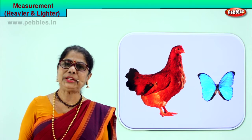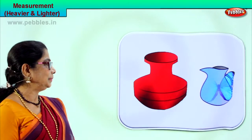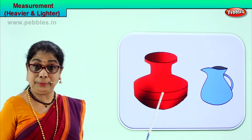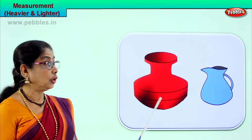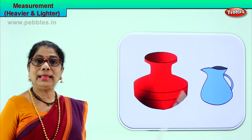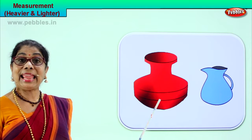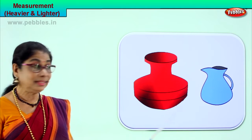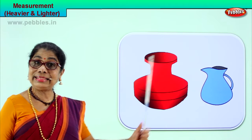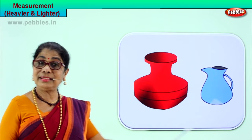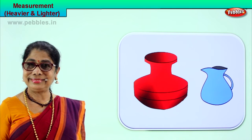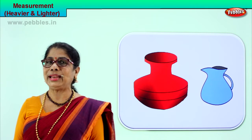Did you understand? Let's go to another picture. We have two pots here. This pot is made of mud — clay. Certainly the clay pot will be very heavy, and this is the plastic jar. The clay pot is heavier than the plastic jar. The plastic jar is lighter than the mud pot.